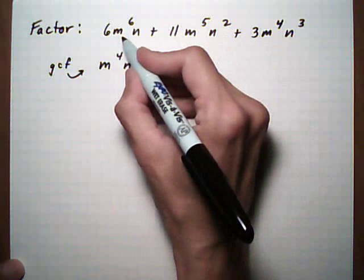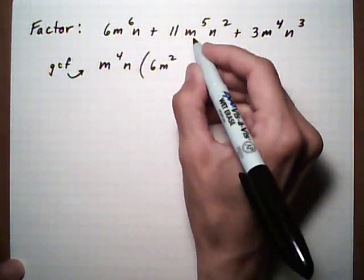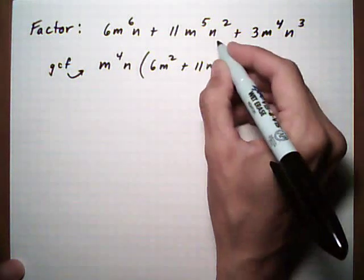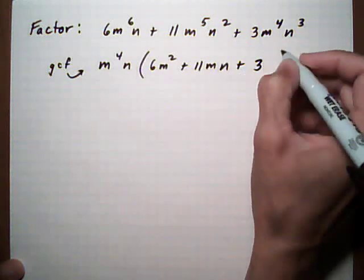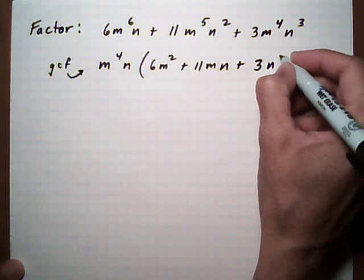Leftovers, six. And we pulled out four m's, we're left with two. We pulled out the n. Plus eleven. We pulled out four m's, we're left with one. We pulled out one n, we're left with one. Plus three. And m to the fourth, we pulled out. We pulled out one n, so we're left with two.